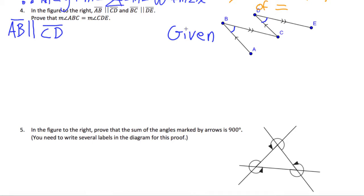We're also given more information. Martine, go for it — line segment BC is parallel to line segment DE. And what is our reasoning? Given. There it is. Aurelio, it's your turn — you are going to write our conclusion. Tell me what to write at the very bottom: therefore, measure of angle ABC is equal to the measure of angle CDE. Go grab some candy.